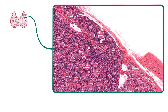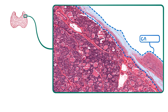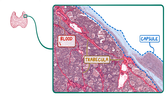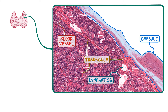The thyroid gland has a thin capsule of connective tissue surrounding it, which can be seen in this low-power image, mostly on the right side. The connective tissue extends inward along with blood vessels and lymphatics, although there aren't any nerves clearly visible in this image.